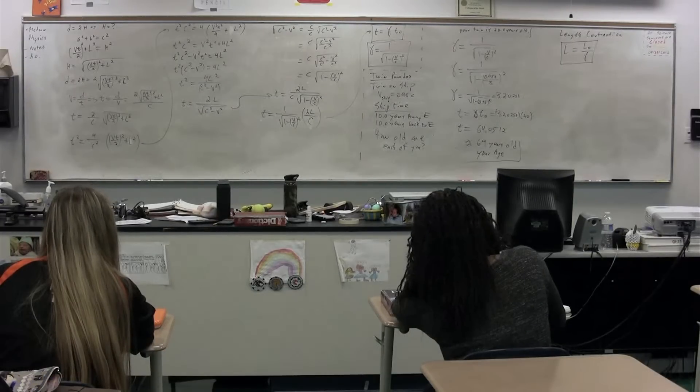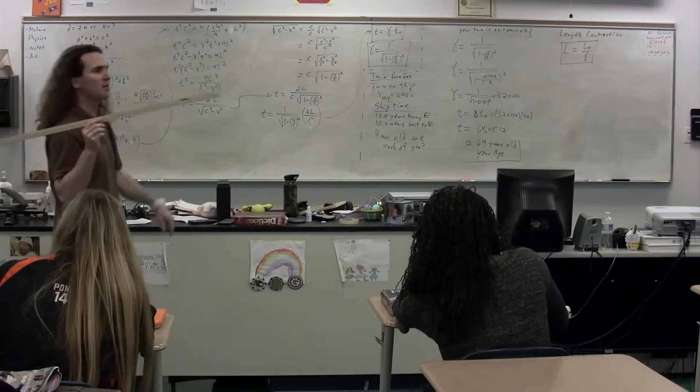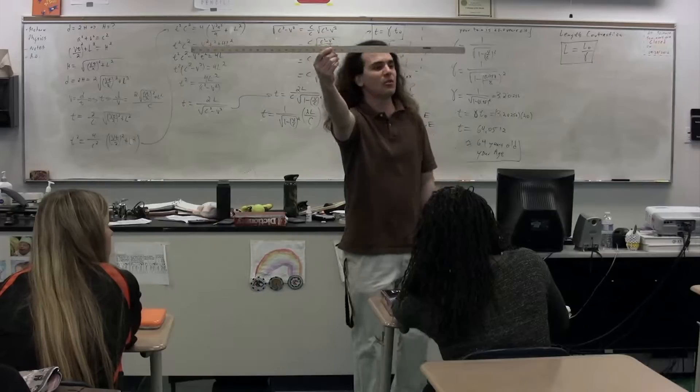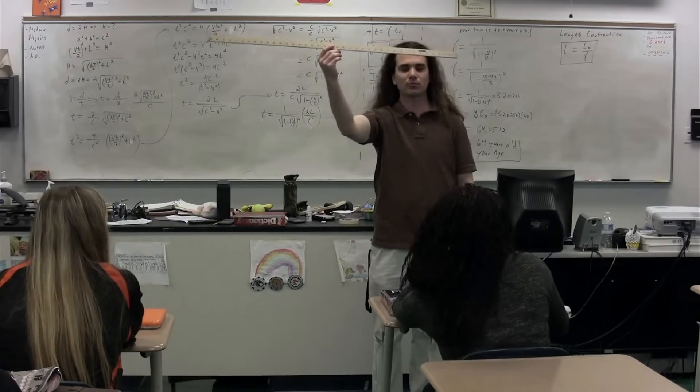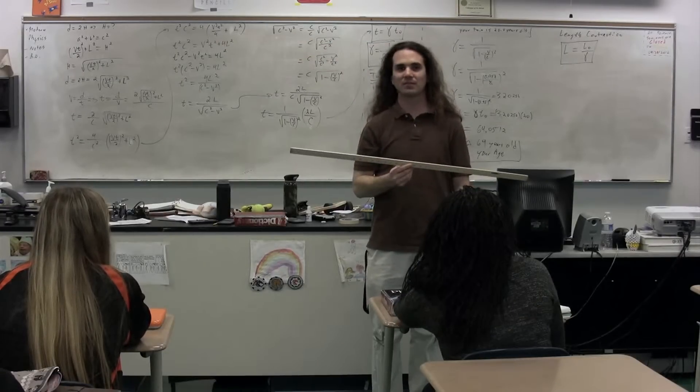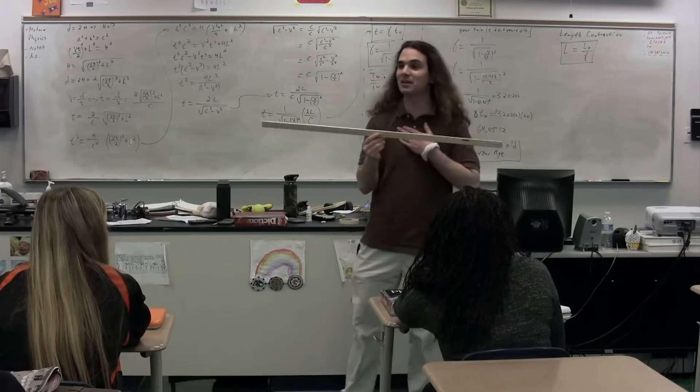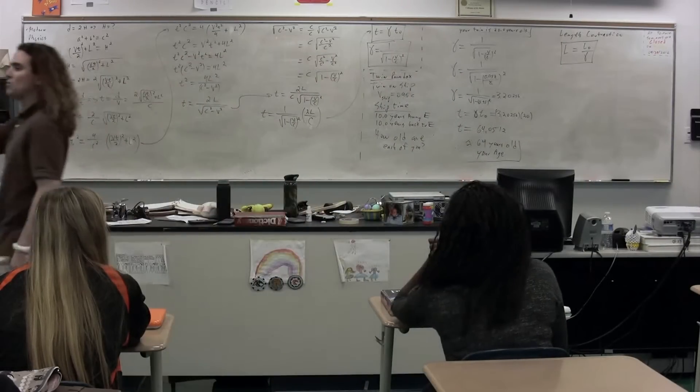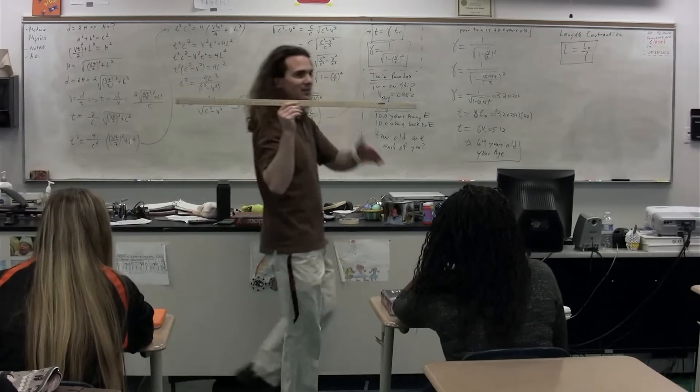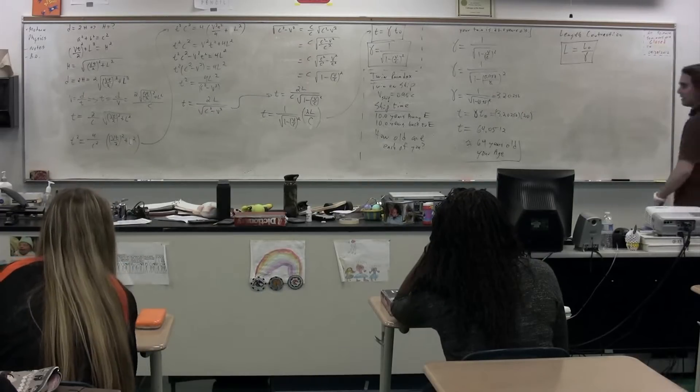So if I were moving on a spaceship—no, we'll go back to the train. If I was on the train moving to the right at 0.95 times the speed of light, you would measure this meter stick to have a length that was approximately one-third of its original length. How long would I measure it to be? One meter, because I am moving with it, right? So I would be compressed as well. So as I move along in the direction of travel, my length is going to be contracted by approximately a third. In this particular case, the concept of length contraction.